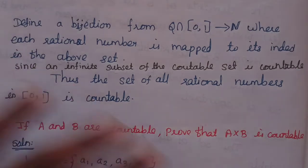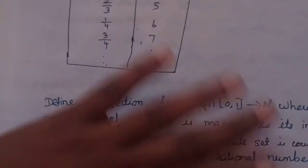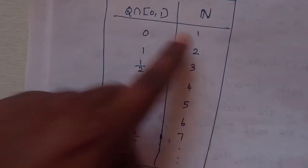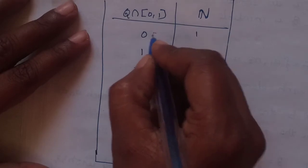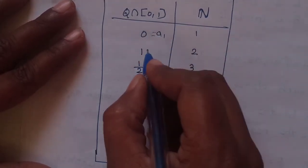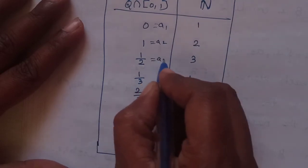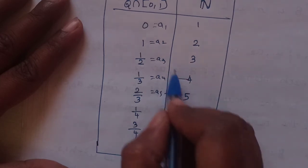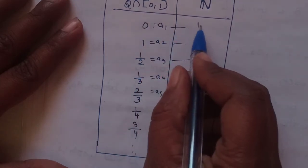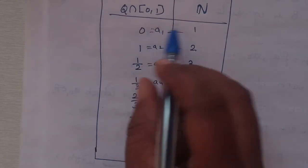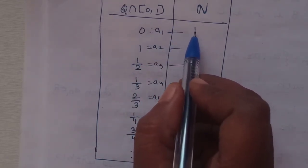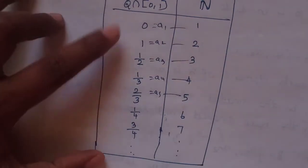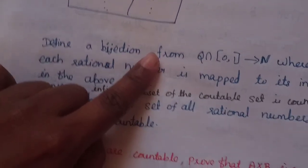The index means each element is labeled. The set Q intersection with closed interval 0,1 is enumerated: the first element is labeled A1 (which is 0), the second is labeled A2 (which is 1), A3 is 1 by 2, A4 is 1 by 3, and so on. This gives a one-to-one correspondence between the natural numbers and the elements of the set.